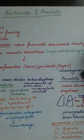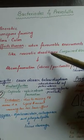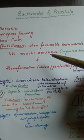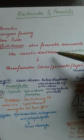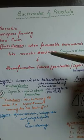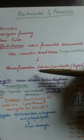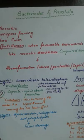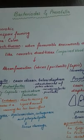A favorable environment for these organisms is dead necrotic tissue. Dead necrotic tissue has impaired blood supply, resulting in less oxygen, so these organisms can easily grow there. This leads to abscess formation wherever dead necrotic tissue is present, and it can also give rise to peritonitis.